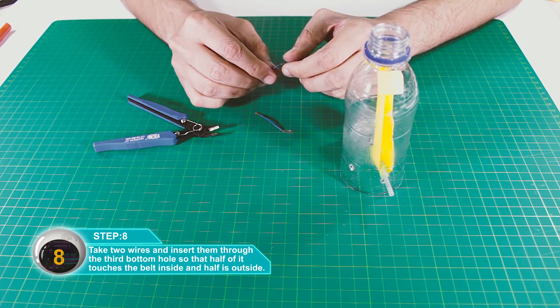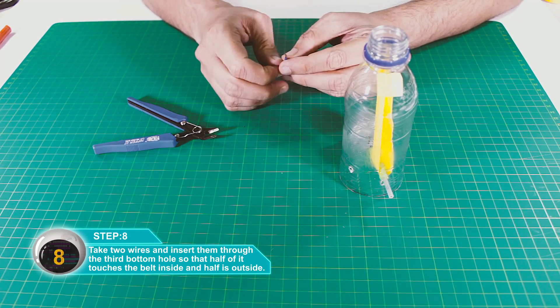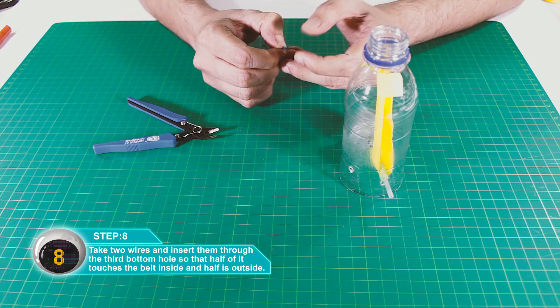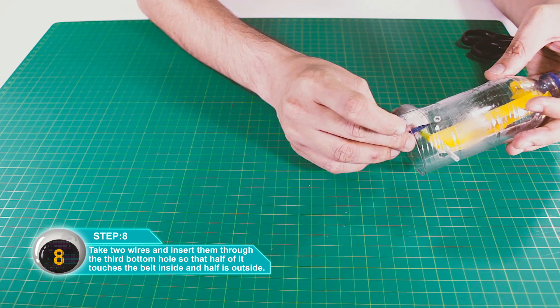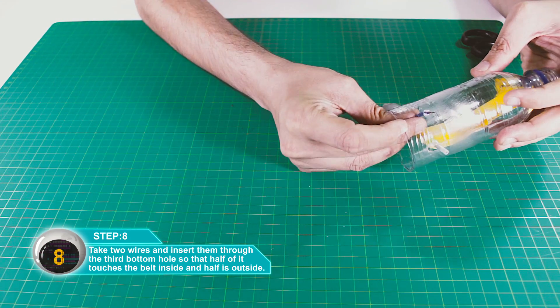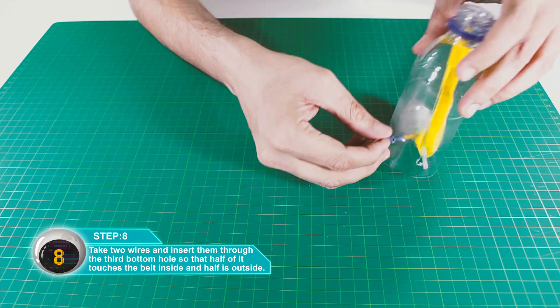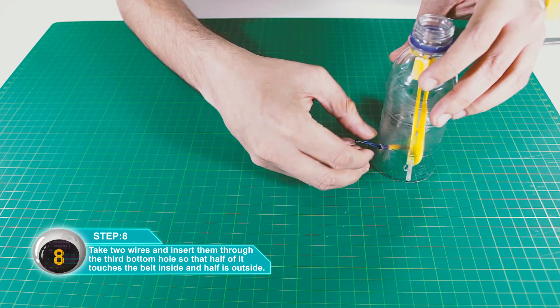Take two wires and insert them through the three bottom holes so that half touches the belt inside and half remains outside.